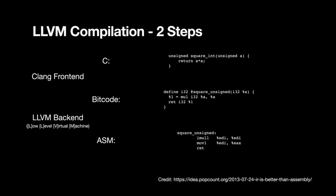LLVM changed that. A few years ago, Apple decided to move to the LLVM compiler, and there are a lot of good reasons for that. LLVM is a two-step process. Unlike GCC, which directly turns C into assembly, LLVM runs C through a Clang frontend that transforms it into bitcode — an intermediate representation of your source code. Then there's a separate program called the LLVM backend that takes the bitcode and turns it into assembly. Splitting these two apart allows improvements to how bitcode compiles to assembly without retokenizing the C code every time, offering significant performance improvements.